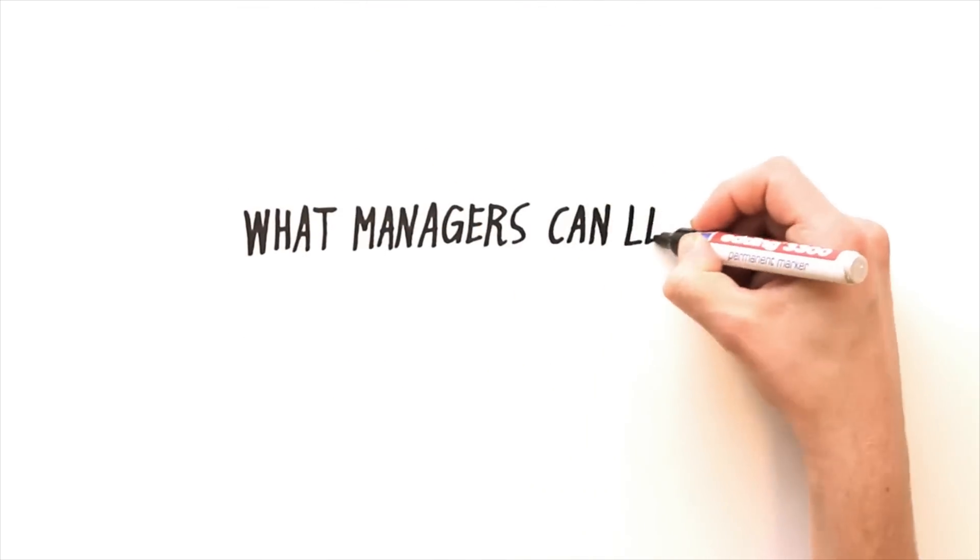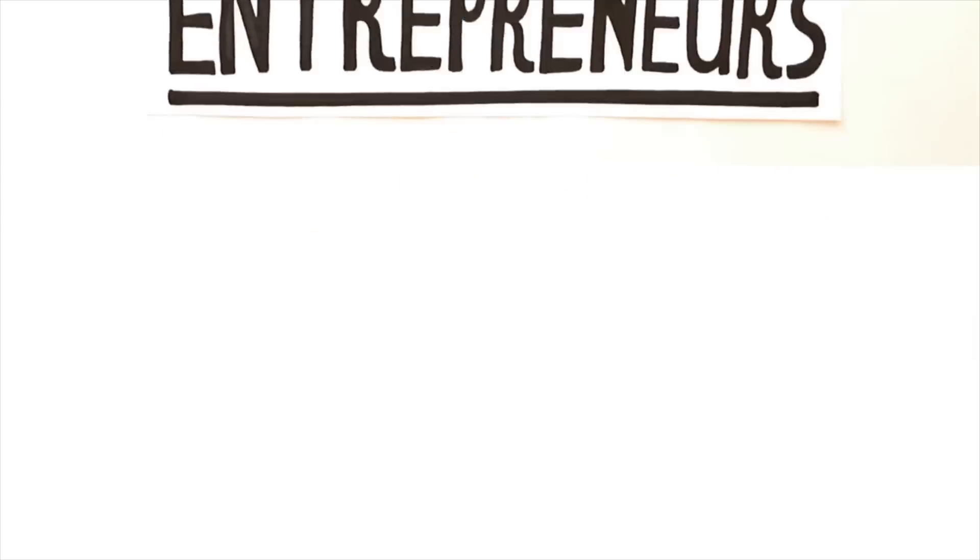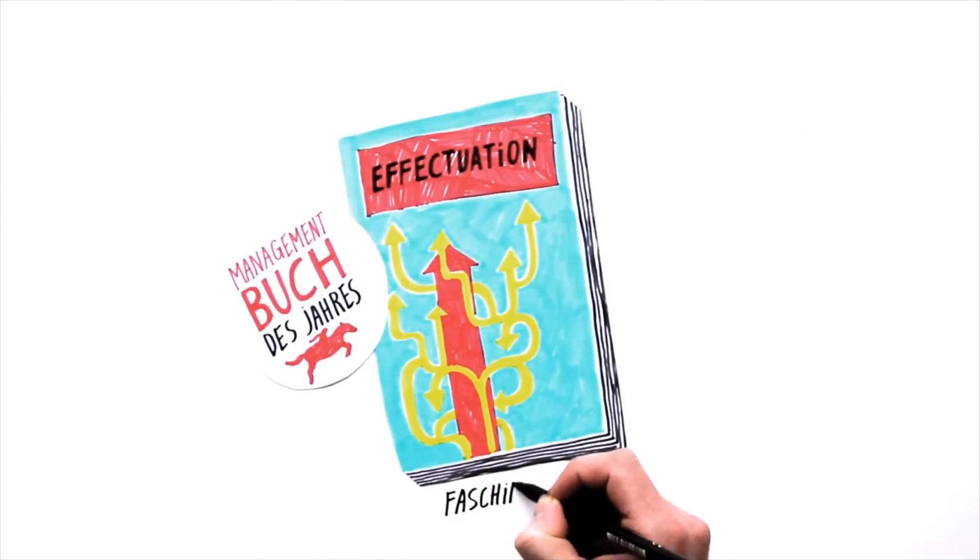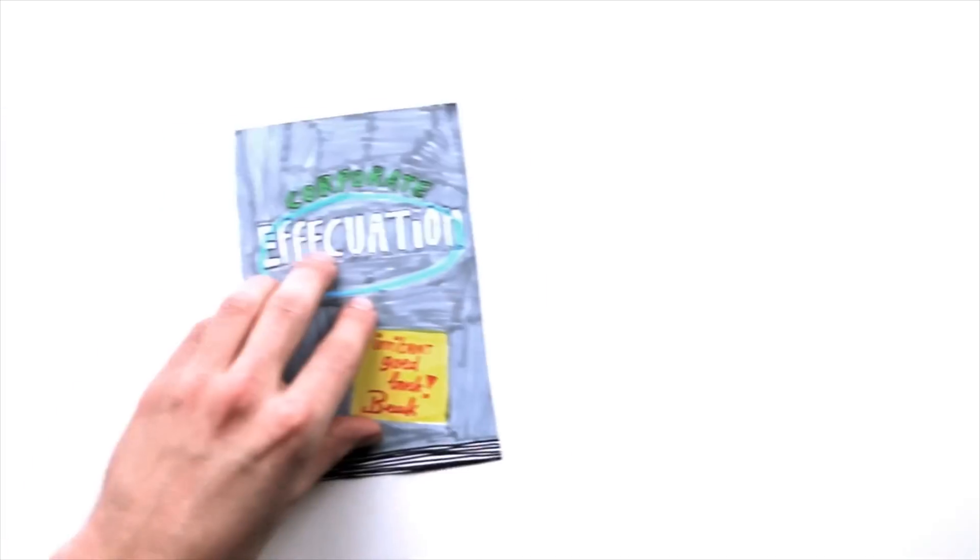So, what can managers learn from entrepreneurs? Applying the five effectuation principles that expert entrepreneurs use, managers can be entrepreneurial and in control at the same time, even in environments where the future is unpredictable.